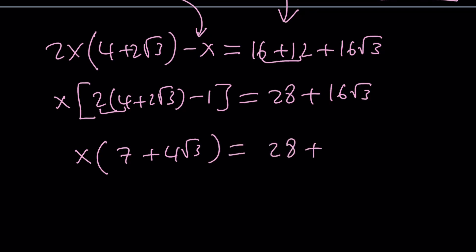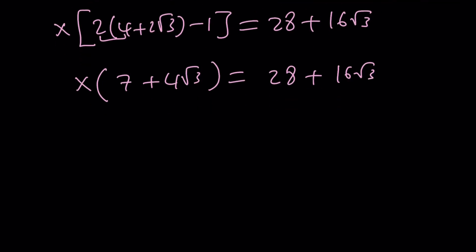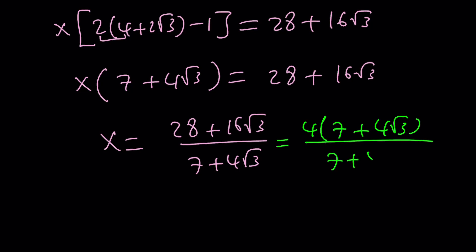And then it's going to be 28 plus 16 root 3. And finally, this gives us the following. And can we simplify this? Well, pretend you didn't know the answer. Yes, because you can factor out a 4 here. That's going to give you 7 plus 4 root 3. And the bottom, 7 plus 4 root 3. Obviously, that's not 0. So we can go ahead and cancel that out, leaving us with x equals 4.